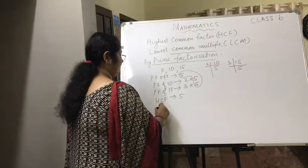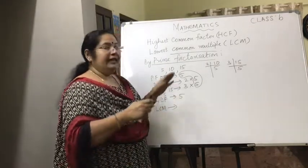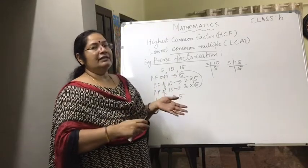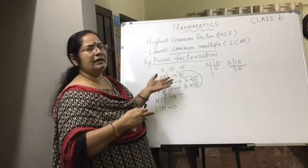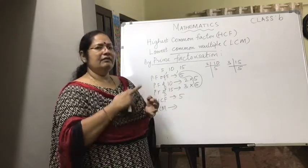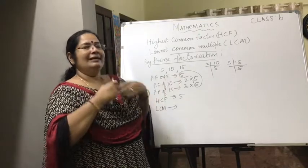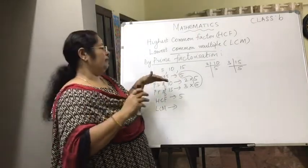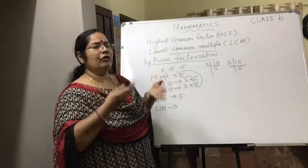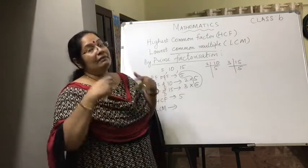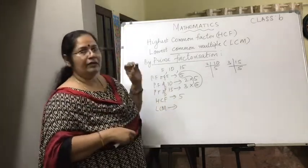Now for the LCM. We take all the prime factors in their maximum occurrence across all the numbers. The factors present are 2, 3, and 5, so we are going to multiply 2 × 3 × 5.